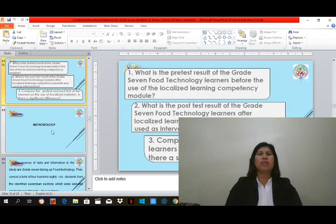The research questions are the following. Number one: What is the pre-test result of the grade 7 food technology learners before the use of the localized learning competency module? Number two: What is the post-test result of the grade 7 food technology learners after localized learning competency module was used as intervention? And number three: Compare the pre-test and post-test of the learners on the use of localized material. Is there a significant difference?